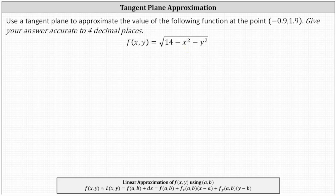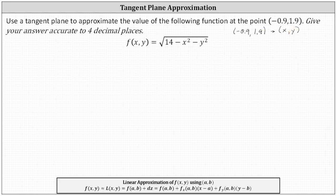Notice the given point is somewhat messy, so we'll use a more convenient point near this point to determine the tangent line approximation or linear approximation. The given point (-0.9, 1.9) means x is -0.9 and y is 1.9, and we're going to use the convenient point (-1, 2), which means a equals -1 and b equals 2.